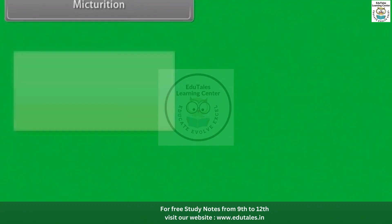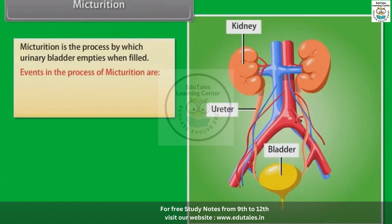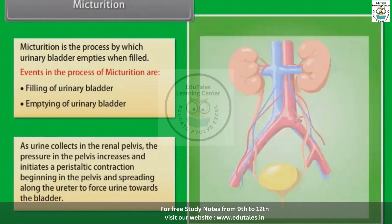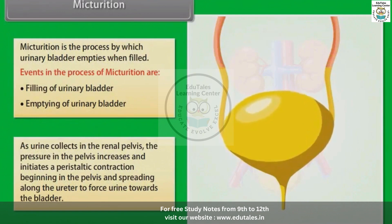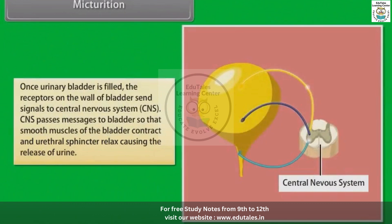Micturition. Micturition is the process by which the urinary bladder empties when filled. The events in the process of micturition are filling of the urinary bladder and emptying of the urinary bladder. As urine collects in the renal pelvis, pressure increases and initiates a peristaltic contraction beginning in the pelvis and spreading along the ureter to force urine towards the bladder. Once the urinary bladder is filled, receptors on the wall of the bladder send signals to the central nervous system. The CNS passes messages to the bladder so that smooth muscles contract and the urethral sphincter relaxes, causing the release of urine.